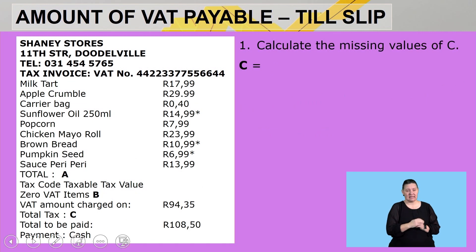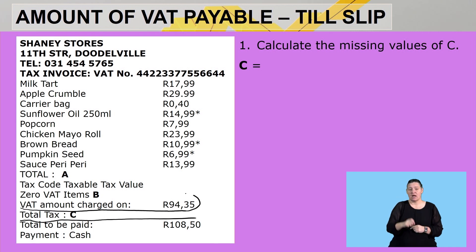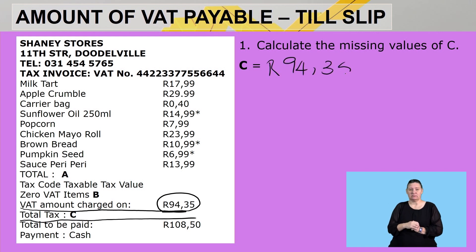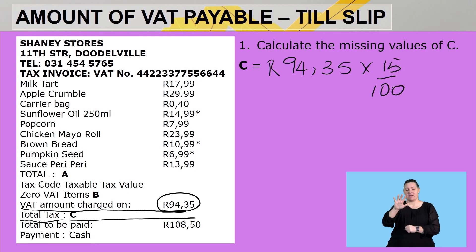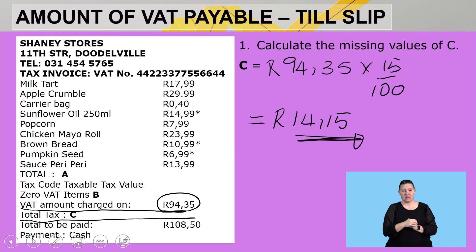The missing value of C is the VAT amount that will be charged. VAT is not charged on the zero-rated items, so the amount subject to VAT is R94.35. We calculate: R94.35 × 15/100, which gives us a VAT amount of R14.15. This is the VAT charged when buying these items from a total of R127.23.